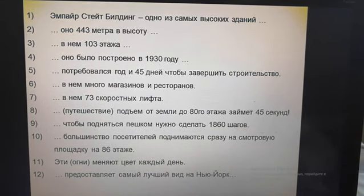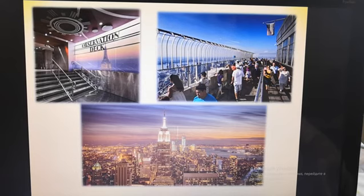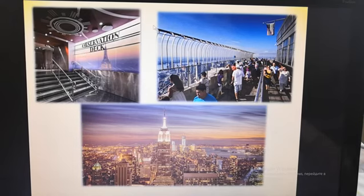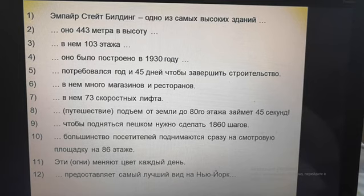Now I want you to have a look at the Empire State Building. This is the Empire State Building in New York. You can see the lights on the top of the building. Here you can also see the observatory — the observation deck. I wish you good luck. Now stop the video and start translating the sentences from the text.